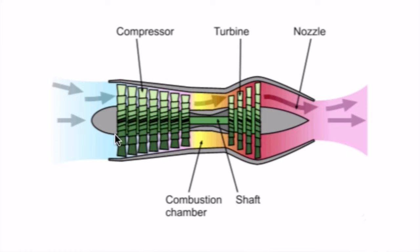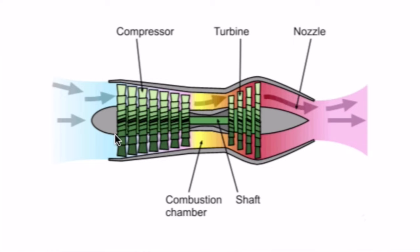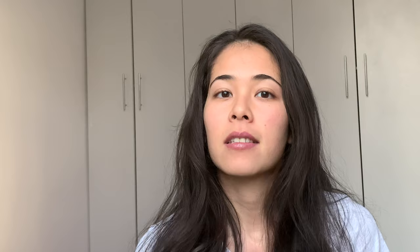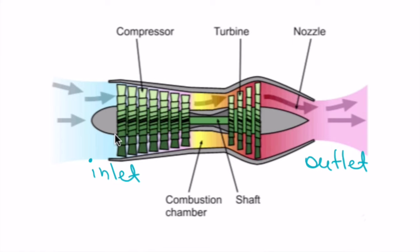You see it has four main parts which are the compressor, the combustion chamber, the turbine and the nozzle. We can also define the inlet and the outlet of the engine or we call them inlet and exit or inlet and exhaust whichever you prefer but we'll just call it one and two in our derivation later.